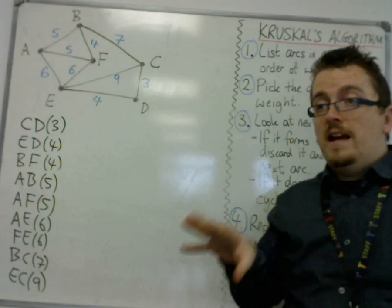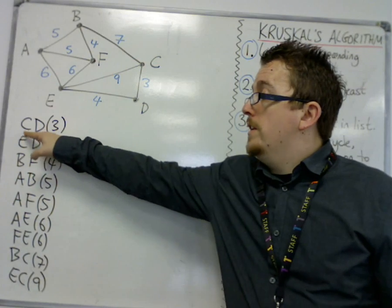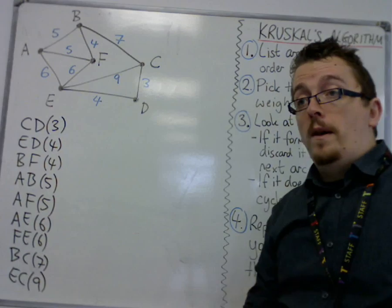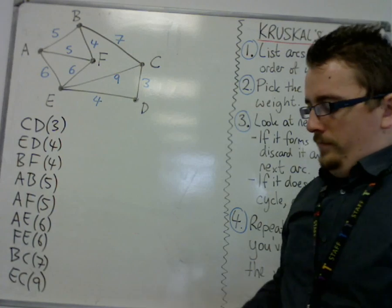And then I've got BC at seven and EC at nine. So I have written them in order of weight. Notice how I am writing down the name of the edge, the label of the edge, or the arc, and the weight on each one. So make sure you have both.